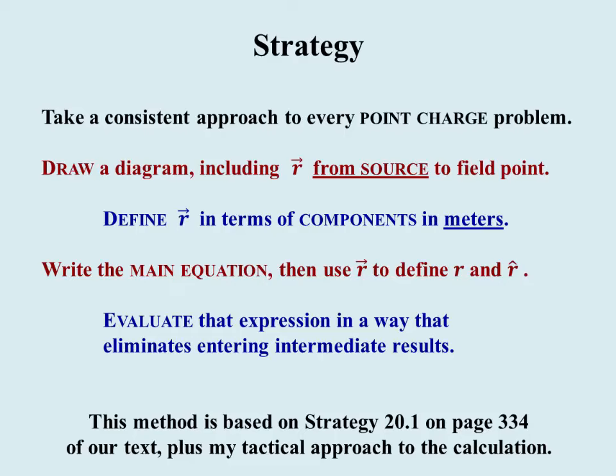Then write Coulomb's equation for the electric field, and then use r vector to define the two things we need to know in that equation: the magnitude of r and its unit vector. We're going to then evaluate that expression in a way that eliminates any need to re-enter intermediate results. This is based on strategy 20.1 on page 334, which is a useful reference point if you want to see this all in print.